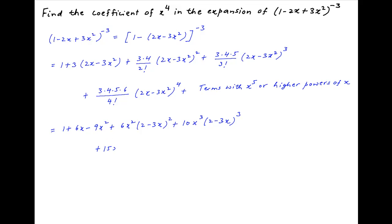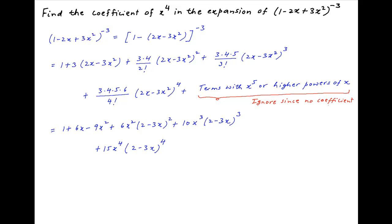Plus 15 times x raised to the power 4 multiplied by (2 minus 3x) raised to the power 4, plus subsequent terms all of which involve x raised to the power 5 or higher powers of x, and will therefore not contain any term involving x raised to the power 4. These terms are therefore ignored.